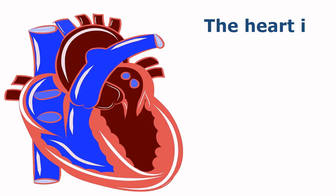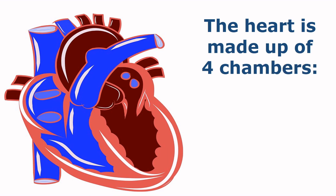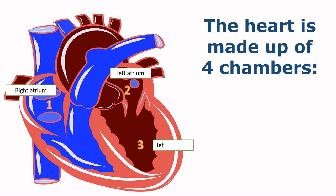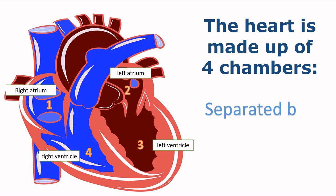The human heart is made up of four chambers: the right atrium, the left atrium, the left ventricle, and the right ventricle. These parts are separated by the septum. You can see the septum between the left ventricle and right ventricle.